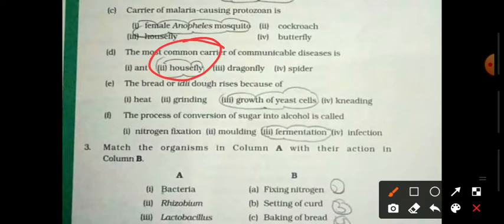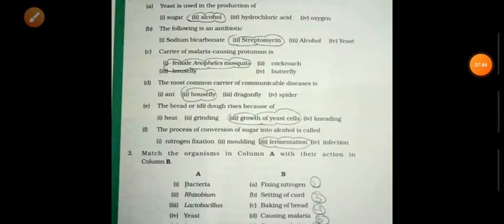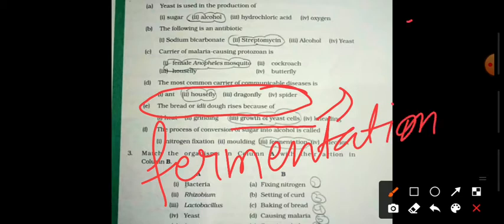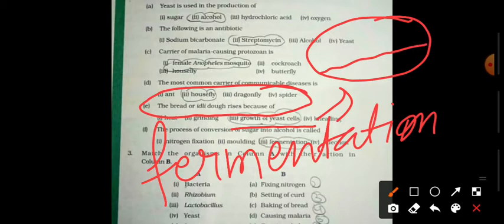Next, bread or idli. Normally we observe that when mom makes idli or dosa, we leave some time. But for very fast, commonly we add baking soda. Basically why do we add all this? The reason we add it is for fermentation process. After fermentation, it becomes puffy.